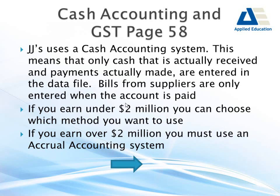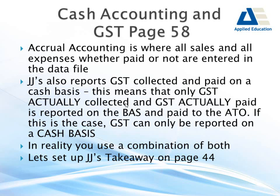If you earn under two million dollars you can choose which method to use - cash or accrual. Once you're over two million, you must use accrual - that's a requirement from the ATO. Accrual accounting is where all sales and expenses, whether you've paid for them or not, get entered into MYOB. Here's my bill from Calis's for $500, not due for another month - I enter it today when I get it, and still put it in my file to be paid later. One's entered, one's not - one's a creditor, one's in spend money.